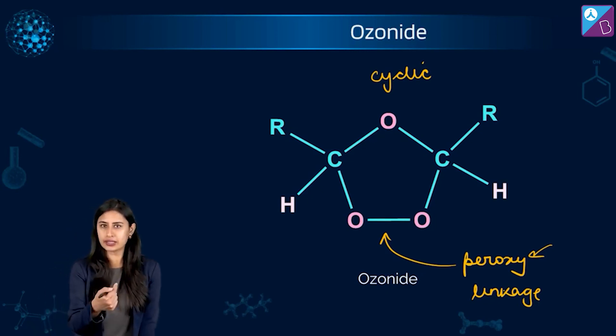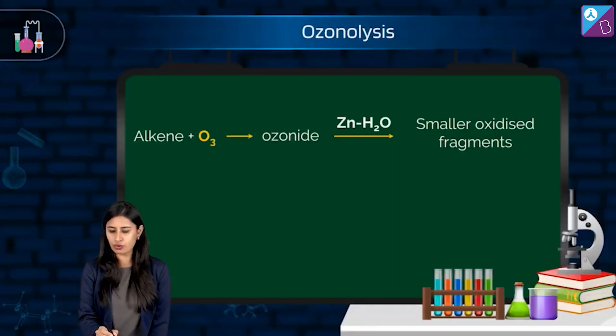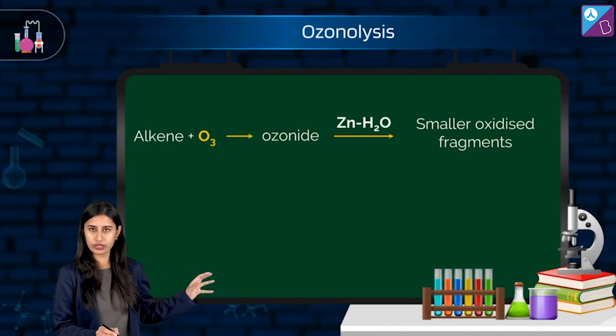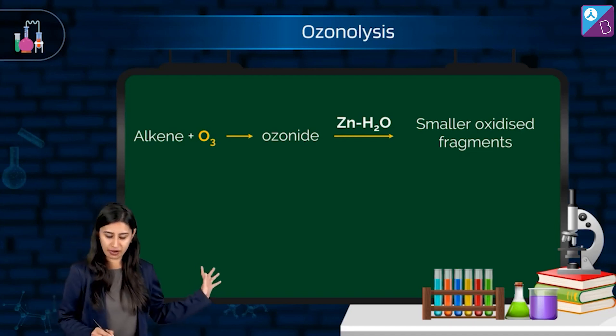Now what we are saying, the third one. Third one was zinc water. Okay. Zn-H2O. This is how we write it. Please check. Alkene, O3, ozonide, add zinc water, small oxidized fragments. Check this out what's happening. The mechanism.